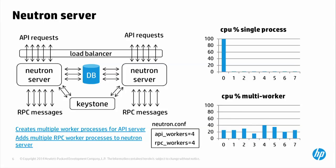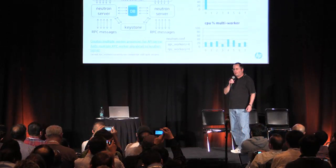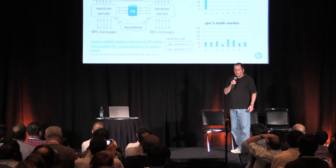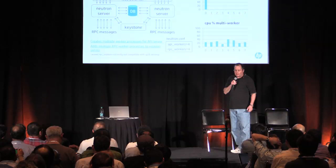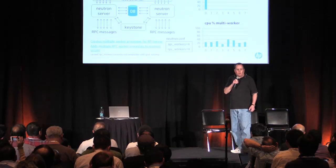When we deployed this in our test environments a year ago, that whole rash of problems went away — and a whole new rash appeared because the problems moved downstream. One caveat on RPC workers: it's currently tagged as experimental. It does not work well with QPID or 0MQ, but with RabbitMQ it works pretty well. You really want to avoid being bottlenecked on RPC processing in your Neutron server.